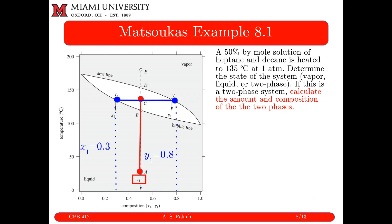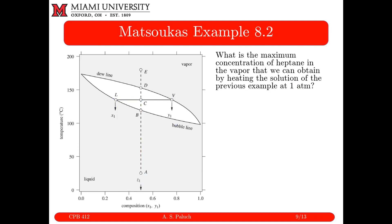The liquid composition x is read where the isotherm hits the bubble line, and the vapor composition y is read where the isotherm hits the dew line, with y > z > x. Using the mass balance, L/F = 0.6, so if the feed is 10 kmol/hr, then 6 kmol/hr exits as liquid and 4 kmol/hr exits as vapor.